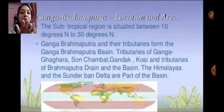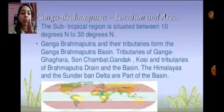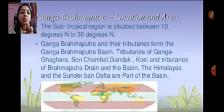The tributaries of Ganga are Ghaggar, Son, Chambal, Gandak, and Kosi. These are the Ganga-Brahmaputra's tributaries.